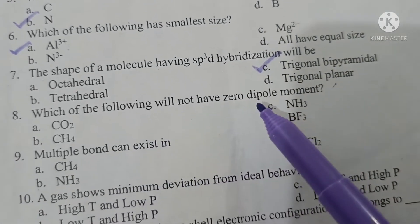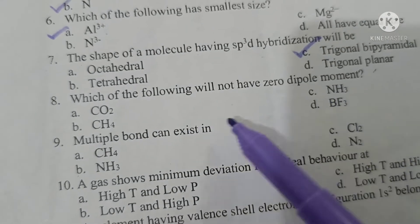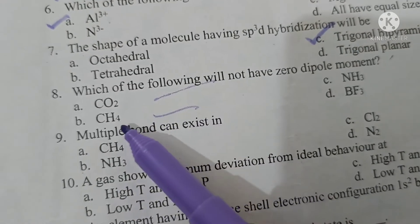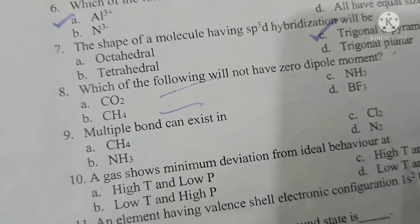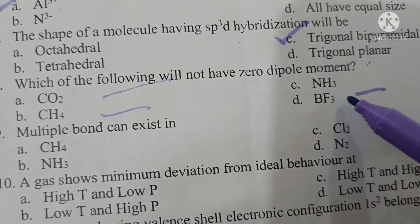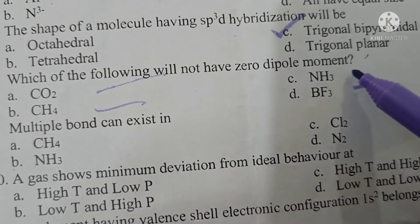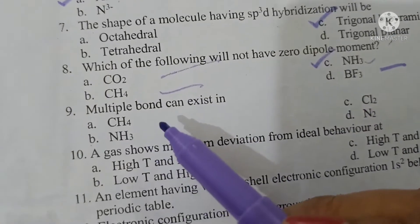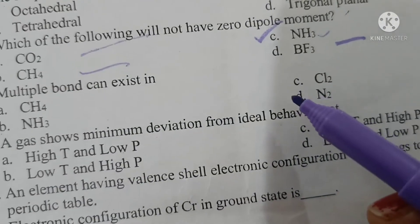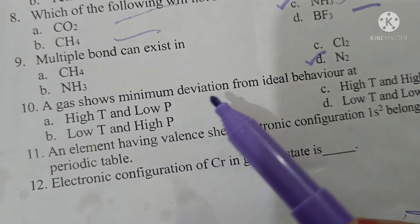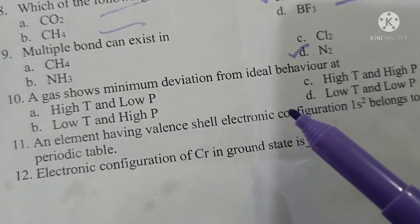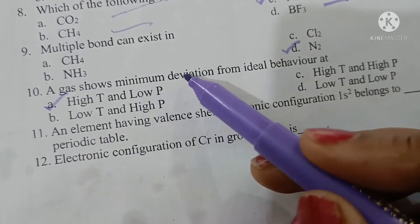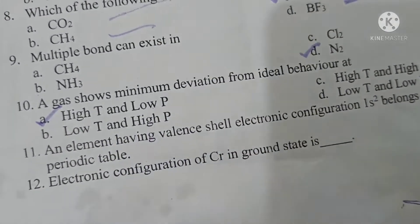Which of the following will not have zero dipole moment? Carbon dioxide is linear, zero. Methane is tetrahedral but equivalent bonds cancel each other and BF3 trigonal planar again cancels each other. Ammonia will not have zero dipole moment. Multiple bond can exist in nitrogen. A gas shows minimum deviation from ideal behavior at high temperature and low pressure. It shows maximum deviation at low temperature and high pressure.